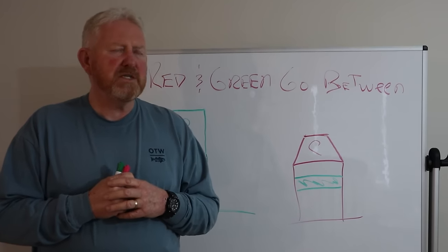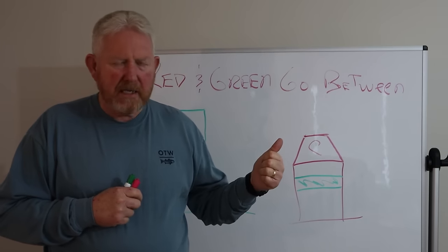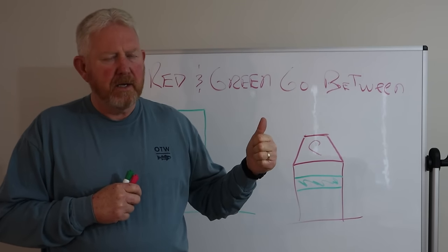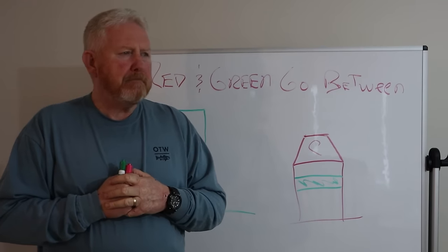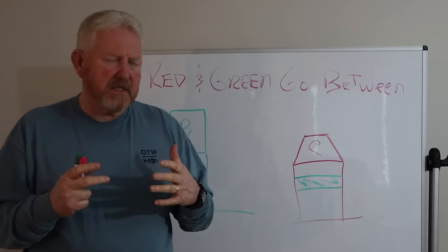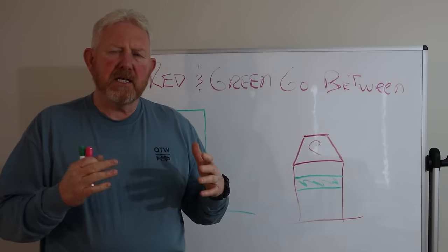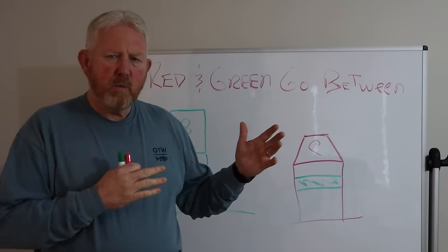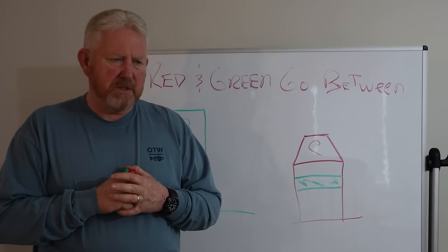You have some buoys that mark swimming areas or maybe a rock. They're usually white. And the writing is orange or blue. But they don't have any navigational significance. I guess you don't want to run over a rock. But it's not telling you where the channel is and how to get home. The red and green ones do that.